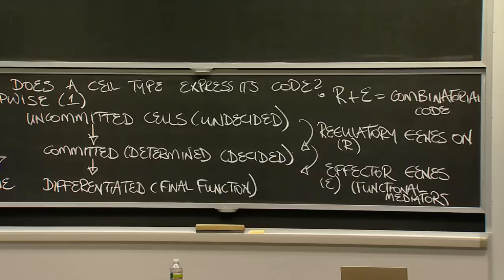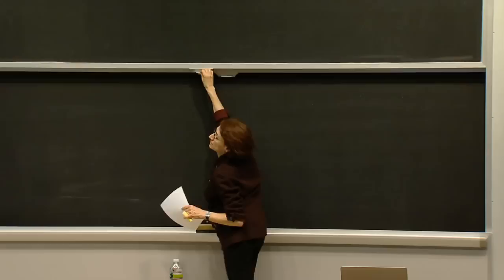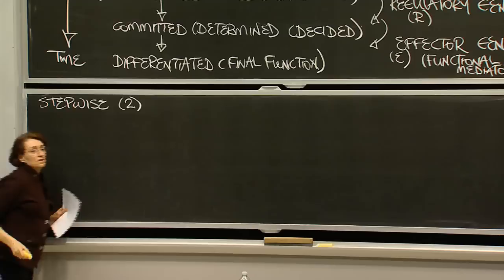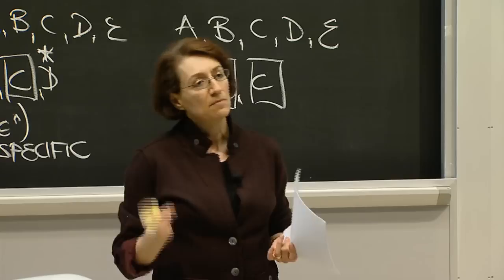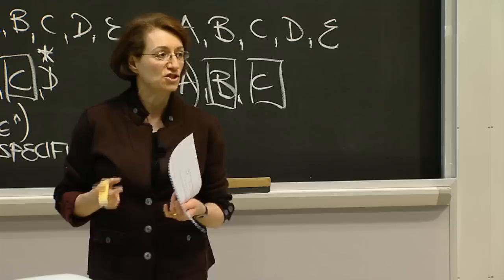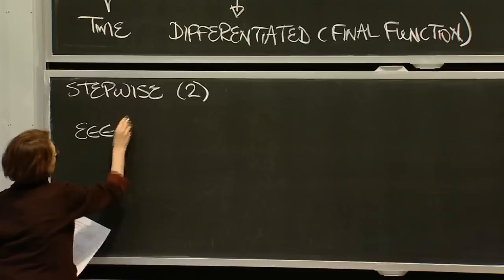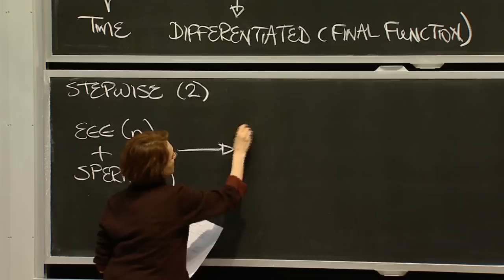That's one answer. But let me give another — also stepwise — that has to do with the history of an organism. Cell type formation starts right at the beginning of an organism's life, when two haploid cells — the egg and the sperm — come together and join to form a diploid cell, the zygote.